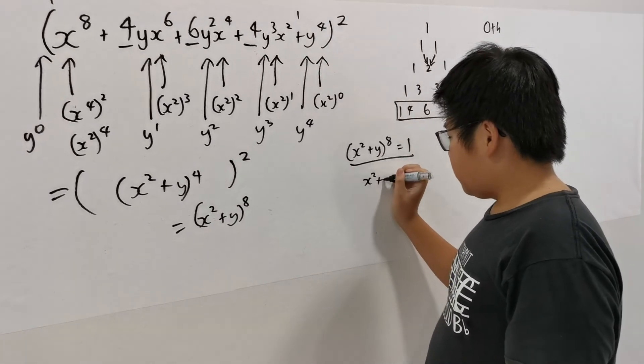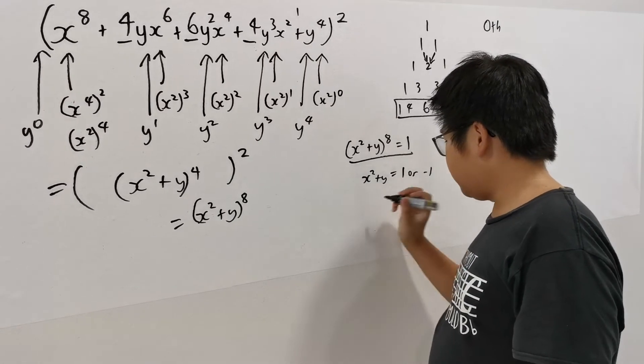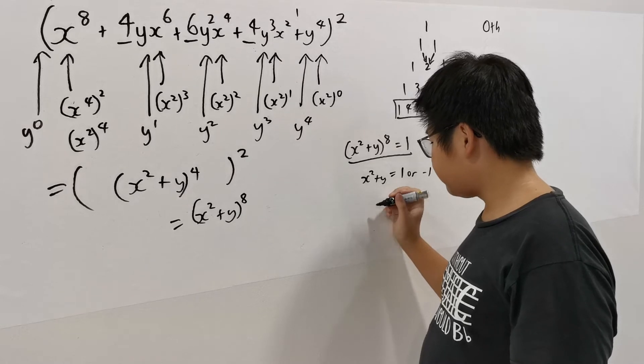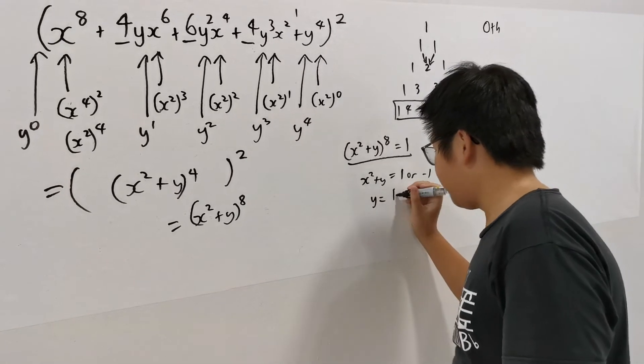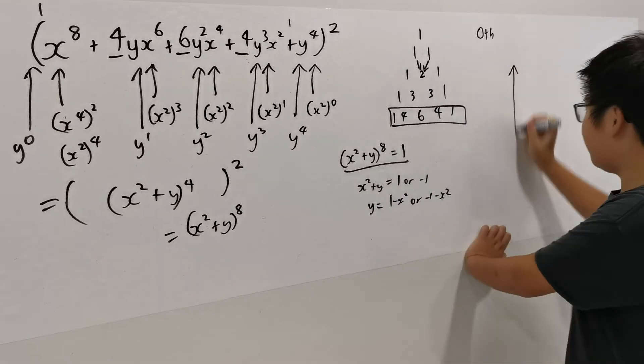x squared plus y equals to, we don't care about complex ones here, 1 or minus 1. So that means, y equals to 1 minus x squared, or minus 1 minus x squared. Pretty cool, huh?